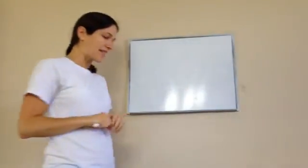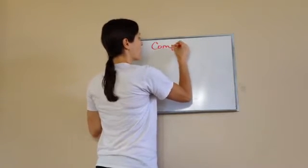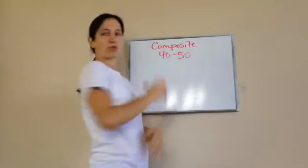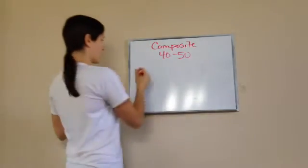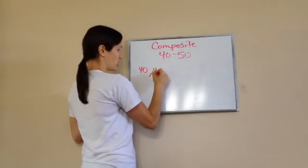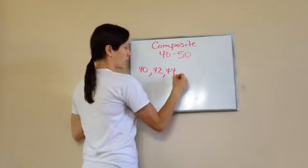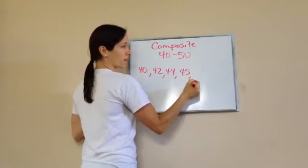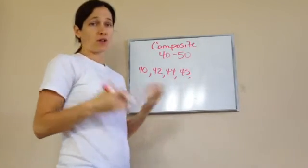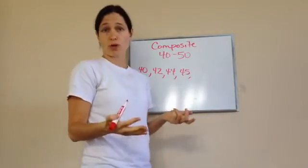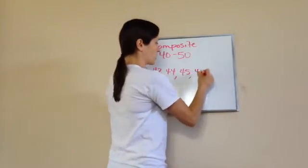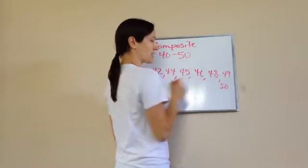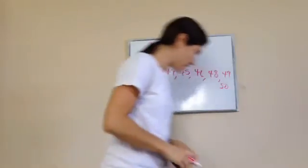Now, if I told you to list the numbers that are composite from 40 to 50, which ones would you list? 40, 42, 44, 45, 46 — we know that all the even numbers will work because 2 will go into even numbers — 48, 49, and 50. Excellent job, we got them exactly right.